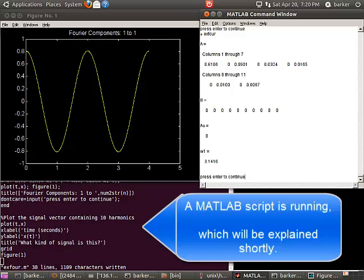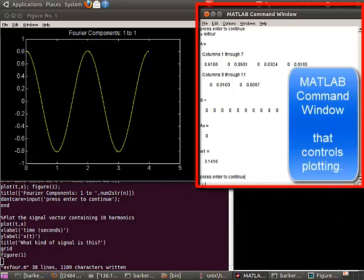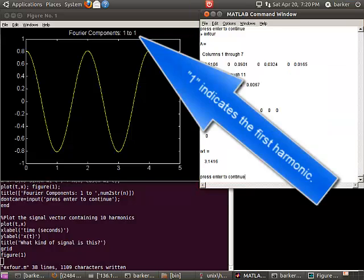A MATLAB script is running, which will be explained shortly. This is the MATLAB plot of the fundamental harmonic. This is the MATLAB command window that controls plotting. 1 indicates the first harmonic.